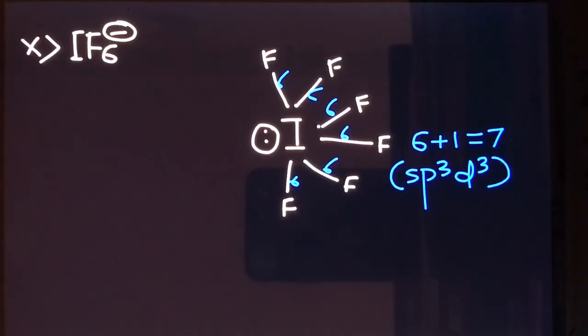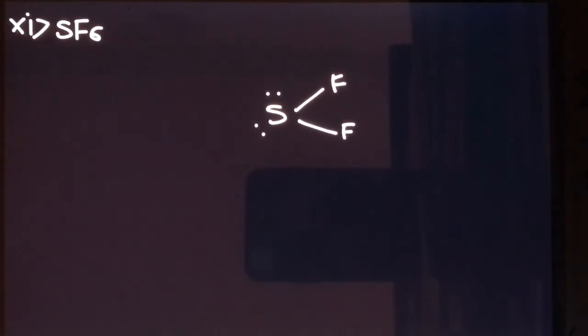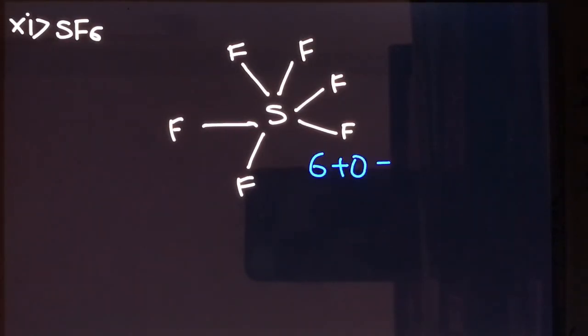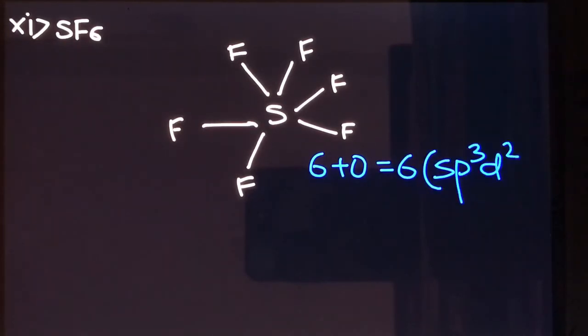Now let's see SF₆, that is sulfur hexafluoride. Sulfur has six outermost electrons and forms six bonds with fluorine, using all its valence electrons. No lone pair of electron is left on sulfur. So the steric number is six sigma bonds plus zero lone pairs — that is six — and the hybridization will be sp3d2.